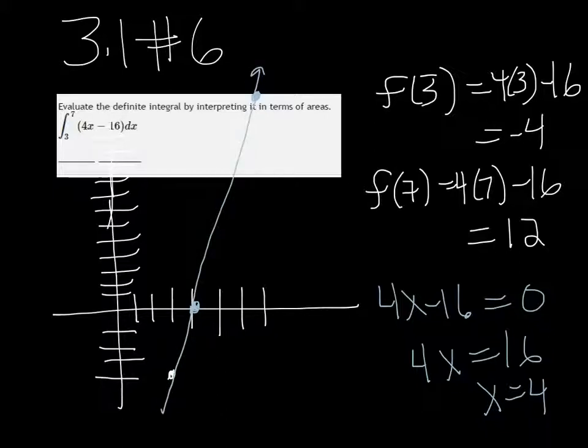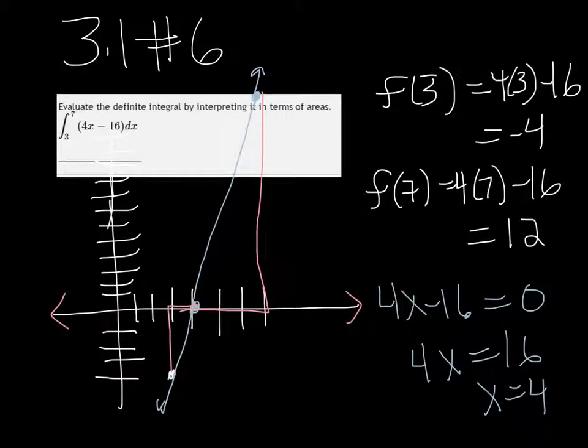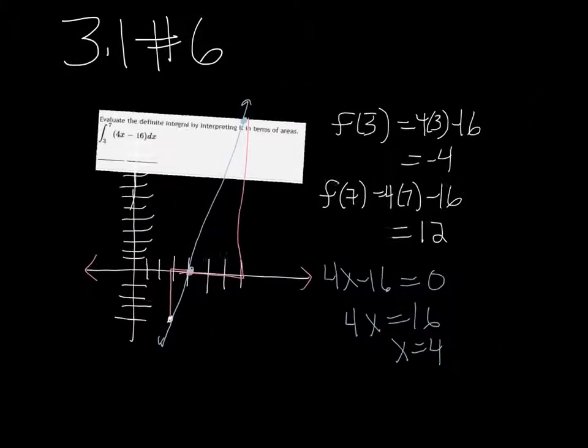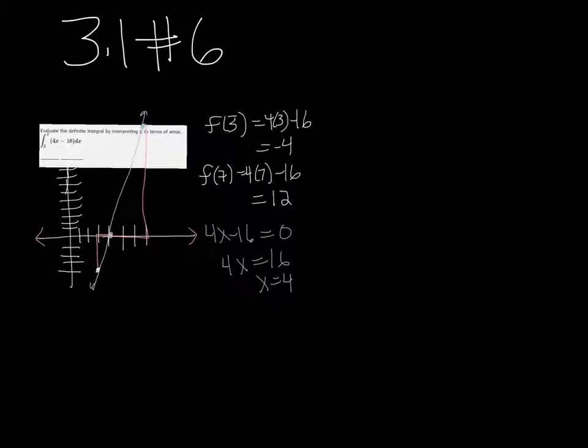we're looking at the area underneath the curve. So in pink I'm going to draw two triangles. One is below the x-axis, so that one is going to be negative, and the other one is positive. We can squish that up.